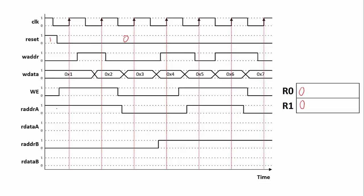We can look at read data A and read data B to figure out which registers are being read. Here we're reading register one, and here we're reading register zero. Because we know which registers are being read, register one is zero for this first clock cycle, and read data B is also zero for this clock cycle. Note that we're ignoring the changing values of write data at this point. At the clock edge, the write address is zero, the write data is one, and write enable is one — so we're going to write the value one into register zero. Read data B is reading from register zero, so it's going to change immediately at the clock edge to reflect that change.